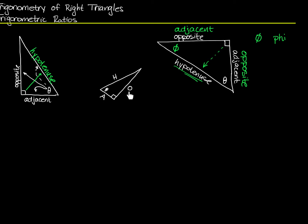I've abbreviated hypotenuse H, opposite O, and adjacent A — that's frequently what you'll see. If you've had some trigonometry before, you may remember this mnemonic, this memory aid: S-O-H-C-A-H-T-O-A. That'll help you remember the first three trigonometric ratios. I haven't told you what they are yet, but let's do that next.